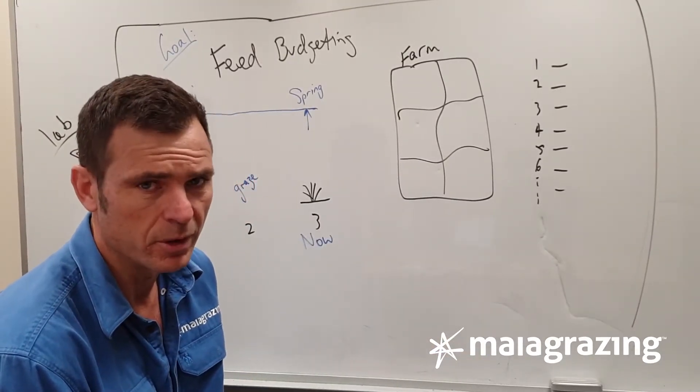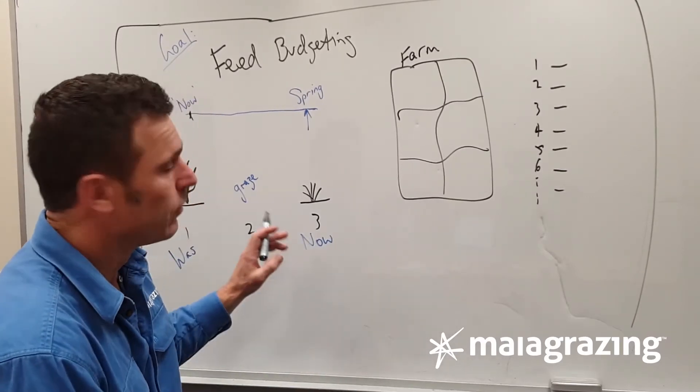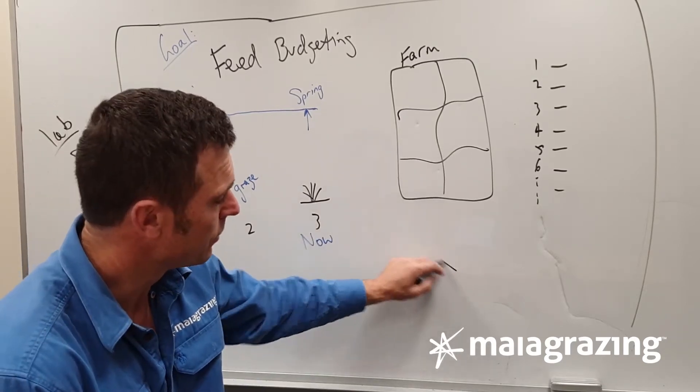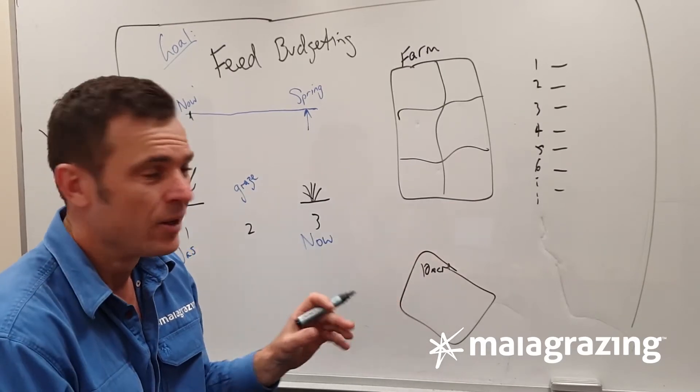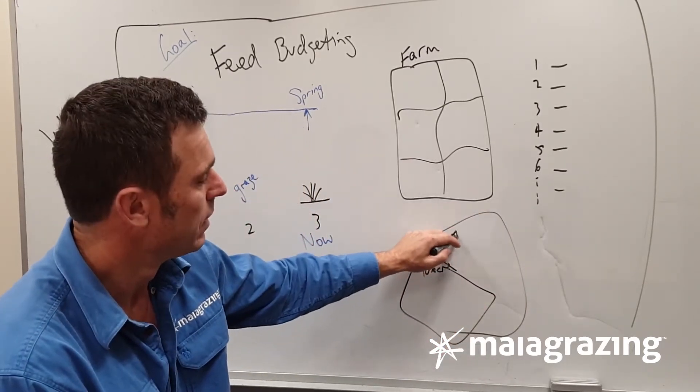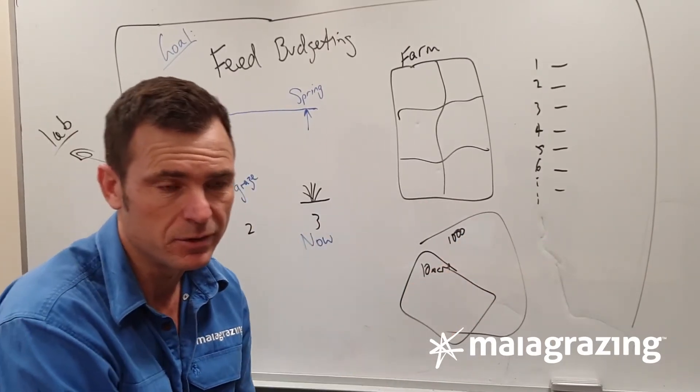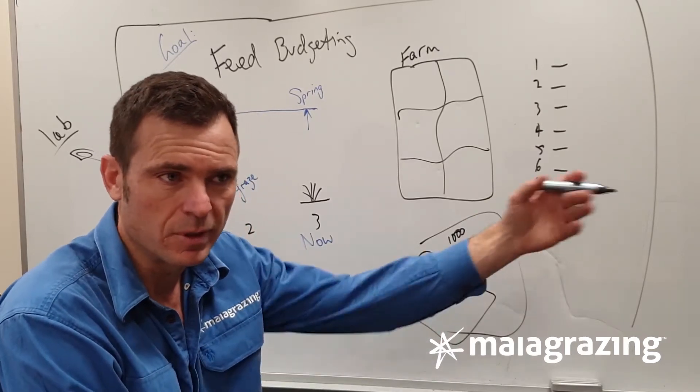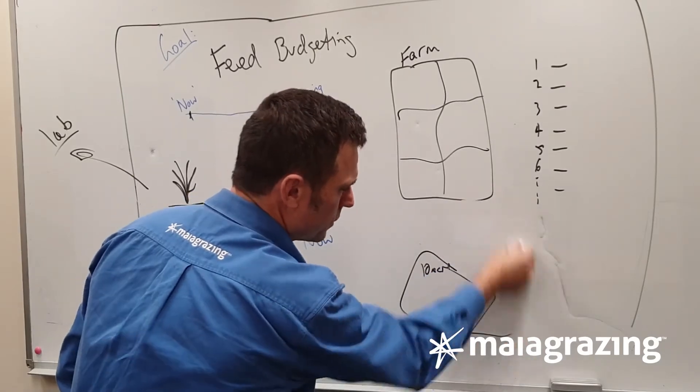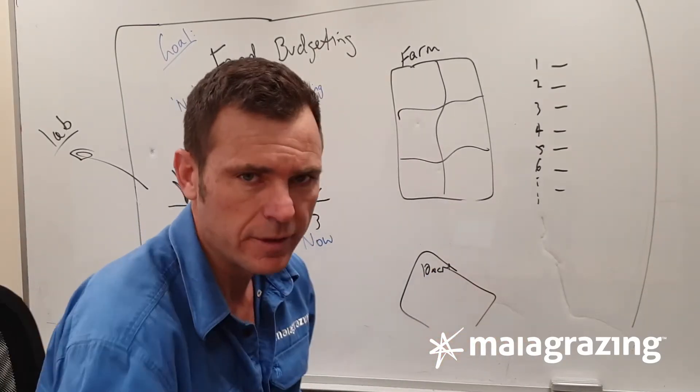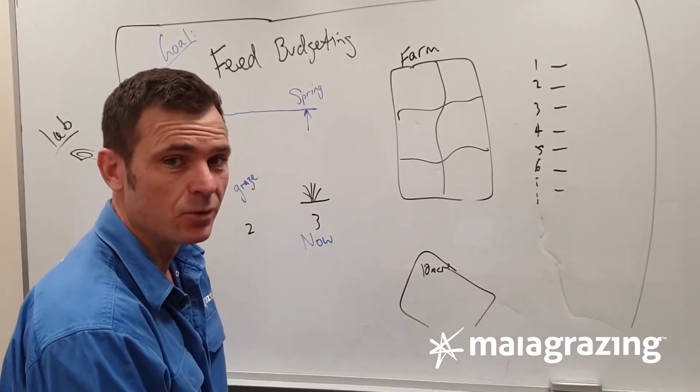We're not going to get too hung up on the terminology because it does vary from country to country. What matters here is we think about it per acre, because if you think about it, we might have a 10 acre field and a 1,000 acre field. If we don't do it per acre, we're never going to get equivalents because our eye just simply can't take in the total tonnage of forage across large areas. We need to think about it per acre and then take it up to the total farm.